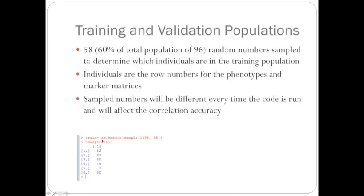If you're running the code, you see different output here. That's just because R is sampling different numbers than what was sampled when I ran it. This is just the head command showing the first five random numbers that were sampled, which are the row numbers that we will use in the training population.